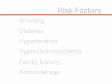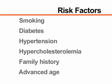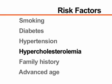Some of the known risk factors for peripheral arterial disease include smoking, diabetes, hypertension, hypercholesterolemia, a family history of the disease, and advanced age.